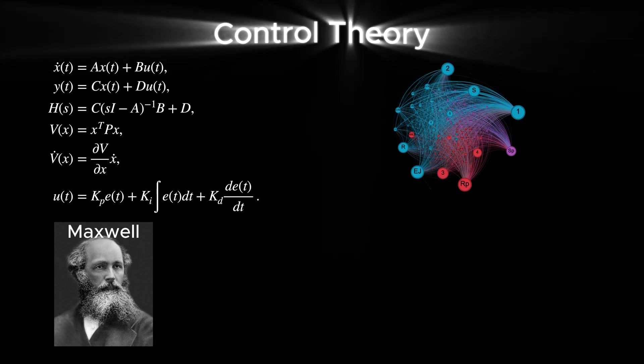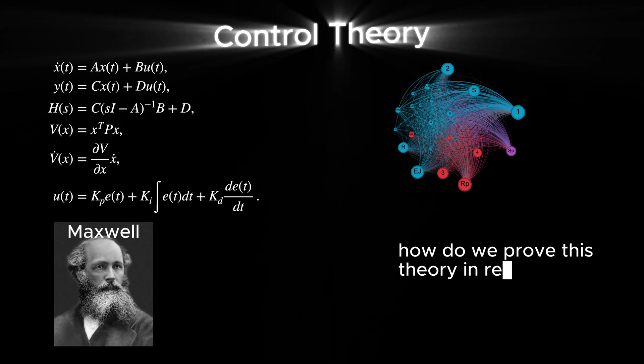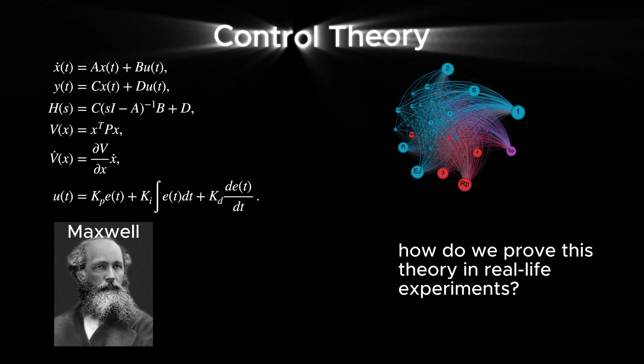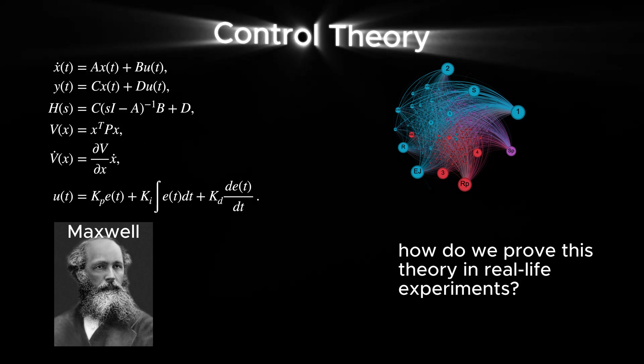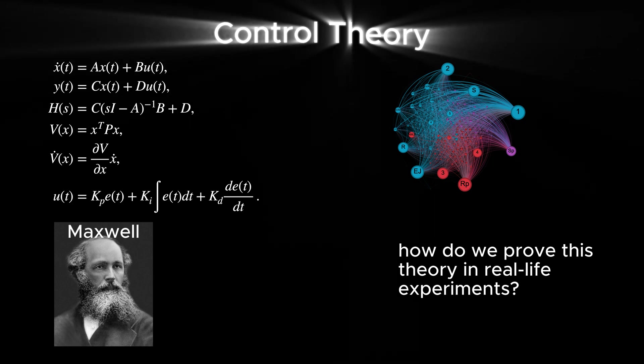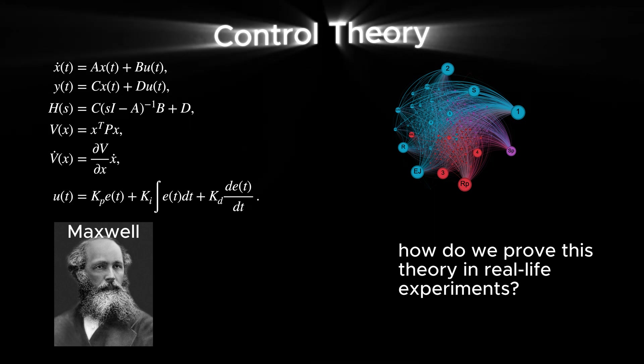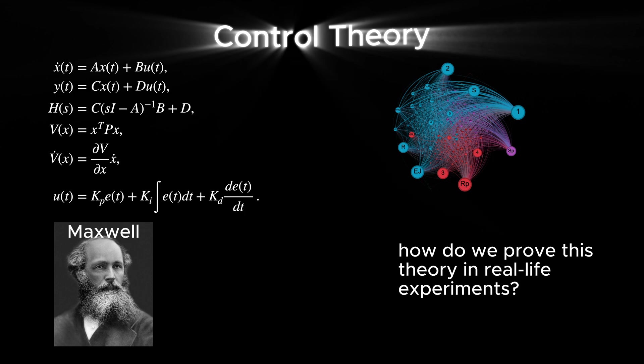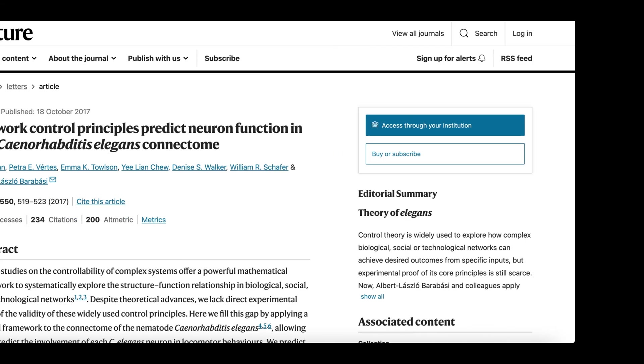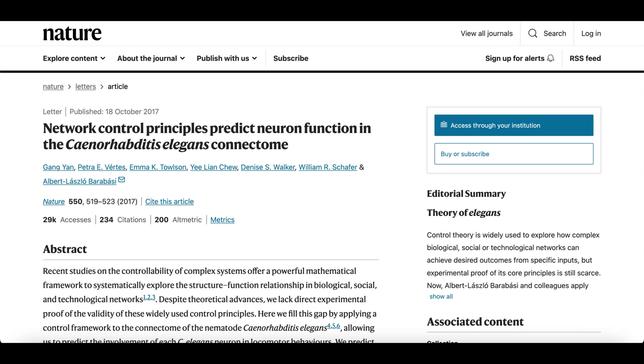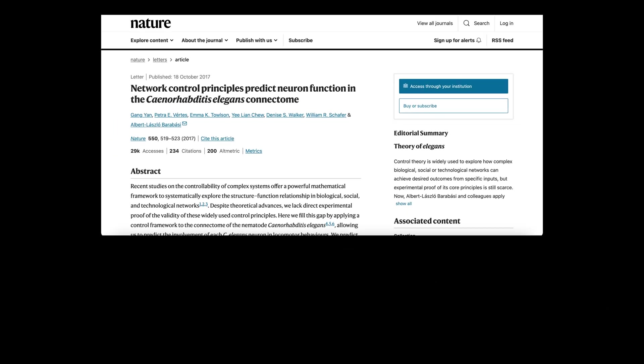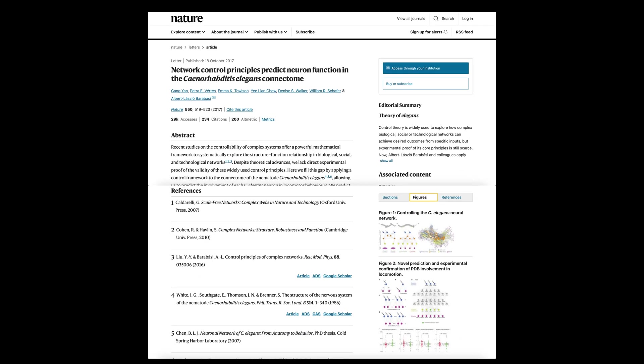The control theory also provides a powerful mathematical framework to uncover how the structure of neural networks dictates their function. We will get into the details of this theory in this video. But before that, here's the challenge. How do we prove this theory in real life experiments? How do we know if it can uncover the mystery of how neural nets do their tasks? Today, we'll dive into how control theory has revealed unexpected insights into the nervous system of C. elegans, answering some of these big questions along the way.